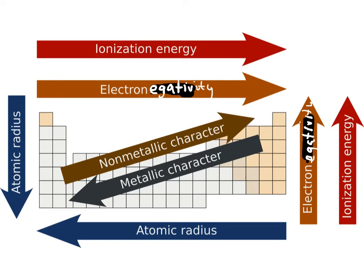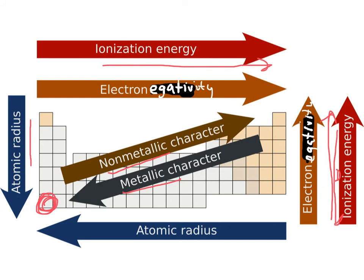Here is an overall picture of the trends. We didn't talk about metallic and non-metallic character, but those are trends too. Ionization energy increases as you go across a period and decreases as you go down a group. Atomic radius is largest in the bottom-left corner — it increases going down and decreases going across. Atomic radius goes against the direction of the other two. Electronegativity and ionization energy both increase toward the top-right corner. If you remember that ionization energy and electronegativity are greatest in the top-right, and atomic radius is greatest in the bottom-left, you'll be in good shape.